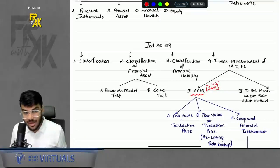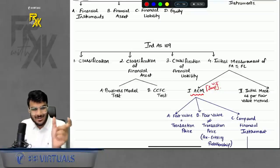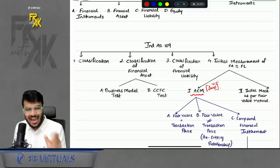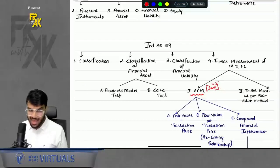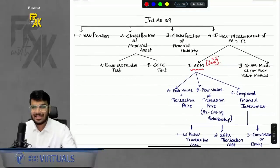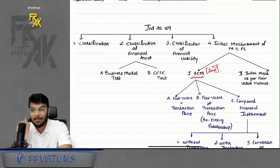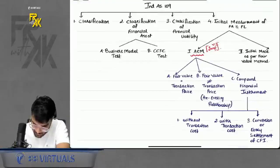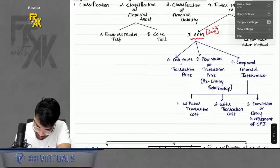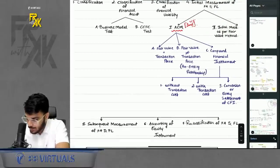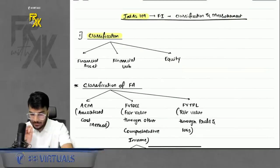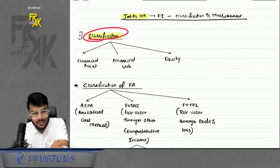IND AS 32 is now clear — we covered definitions of financial asset, financial liability, equity, the fixed-to-fixed test, and CFI. The definition of a financial instrument itself: it is a contract that gives rise to a financial asset for one entity and a financial liability or equity for another entity. Now let's move to IND AS 109, the most important index where the bigger practical questions come from.